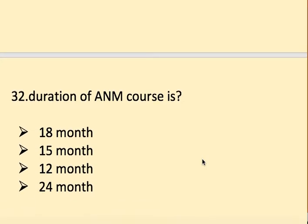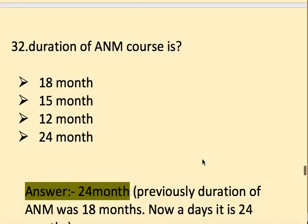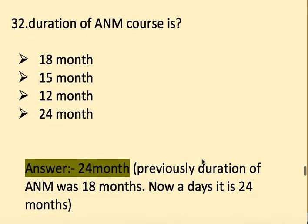Next question: What is the duration of the A&M course? Options: 18 months, 15 months, 12 months, and 24 months. The right answer is 24 months — previously the duration was 18 months, but nowadays it is 24 months.